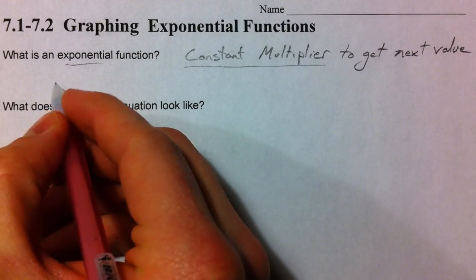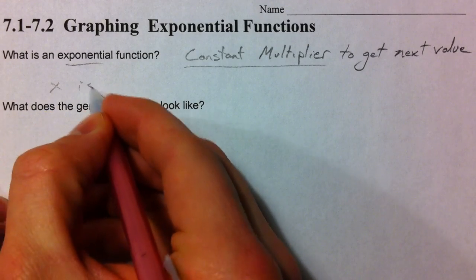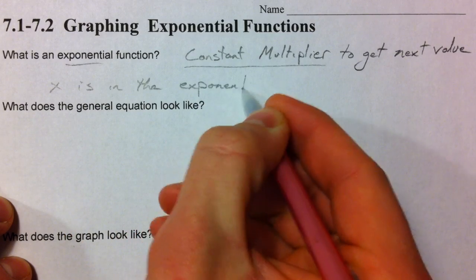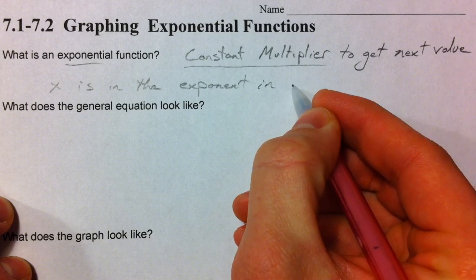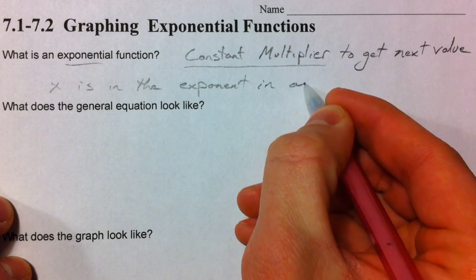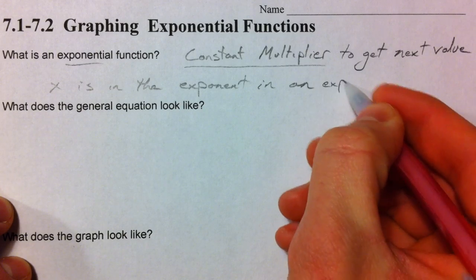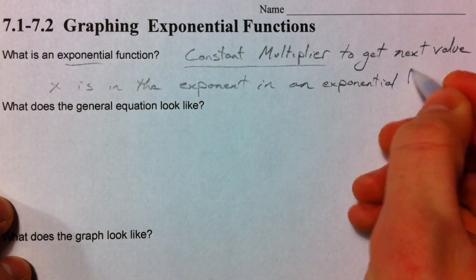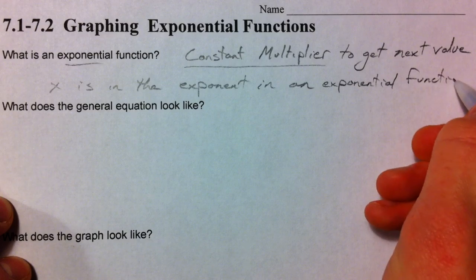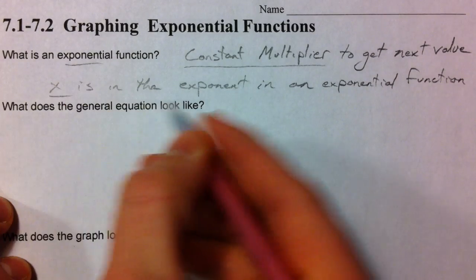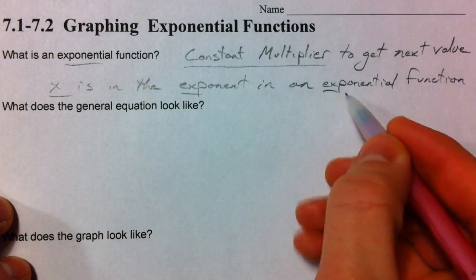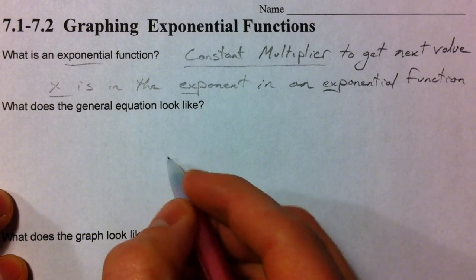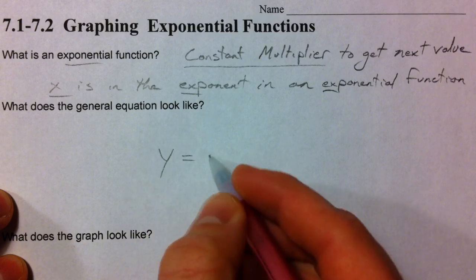I like to think that x is in the exponent in an exponential function. It has a nice little ring to it, just with the x is in the exponent in the exponential function. Nice little rhythm. So, what does the general equation look like?